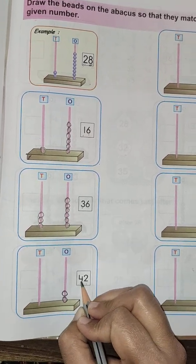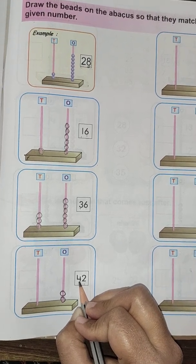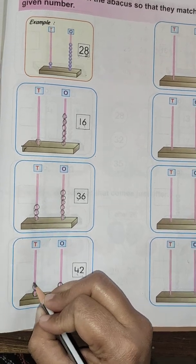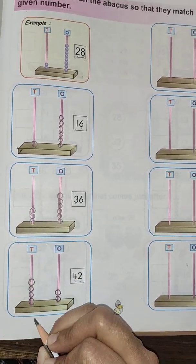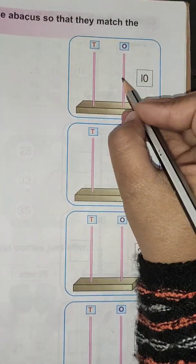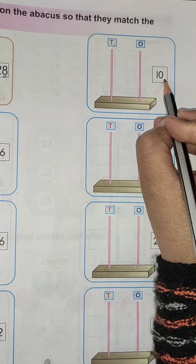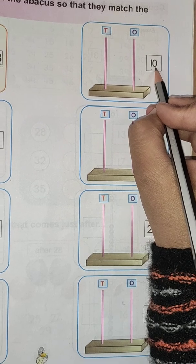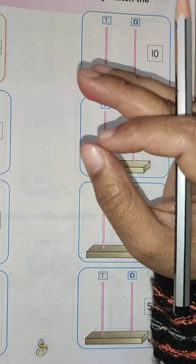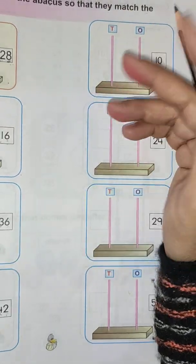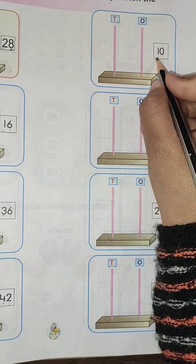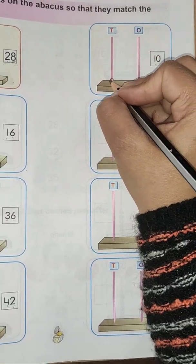And in place of tens, the number is 4. In place of ones, we draw no beads, and in place of tens, we draw only 1. This is 1 and 0: 10.